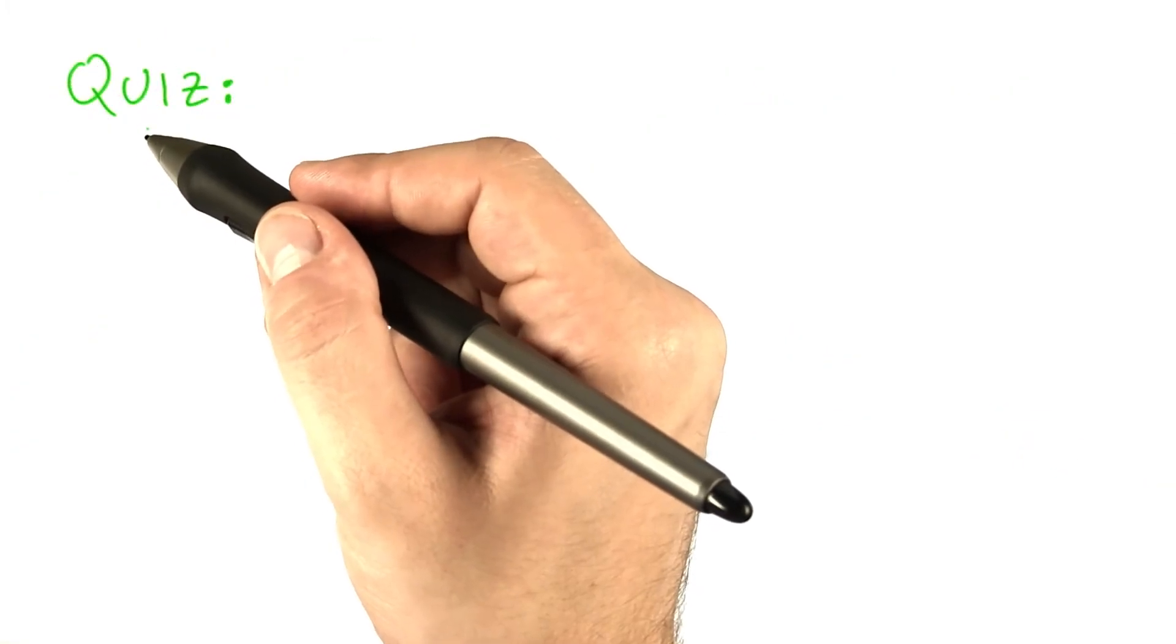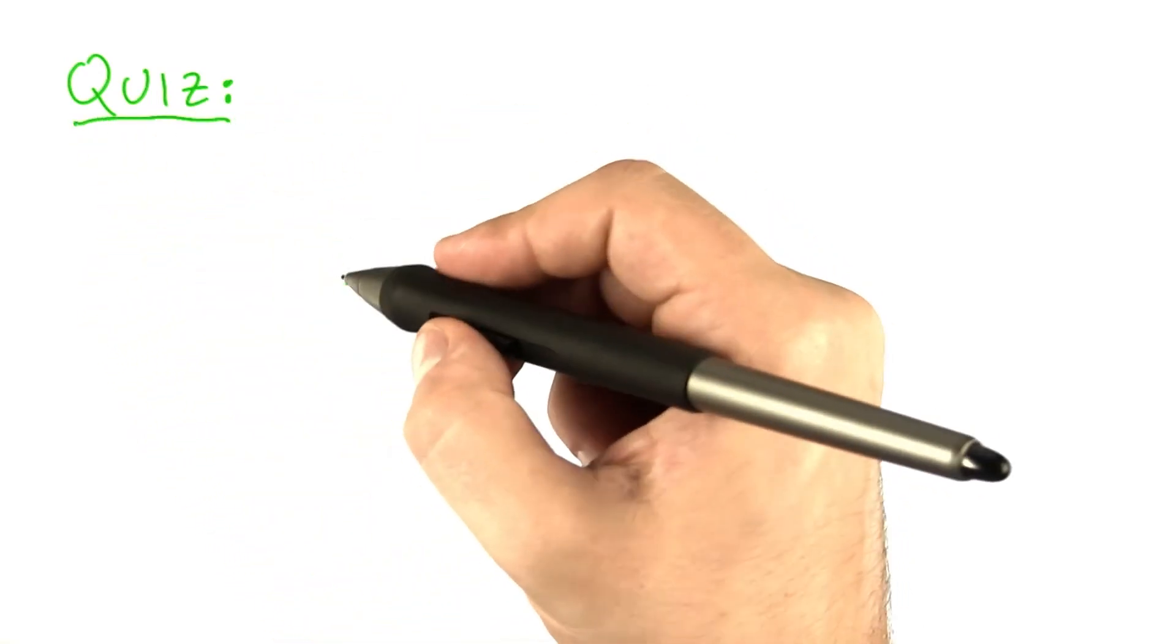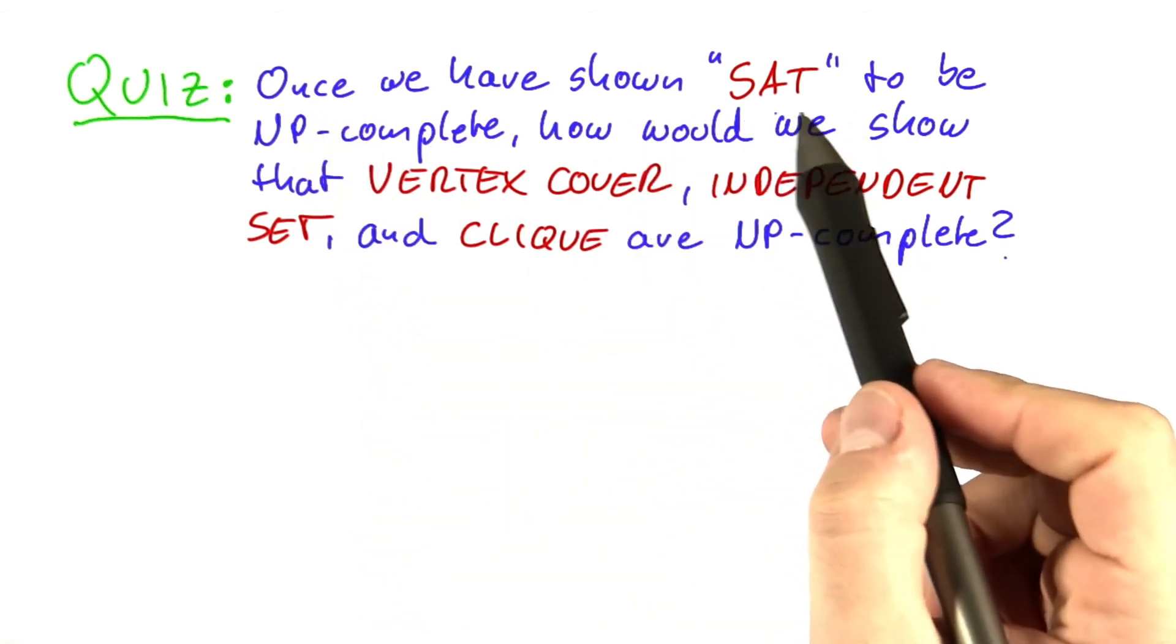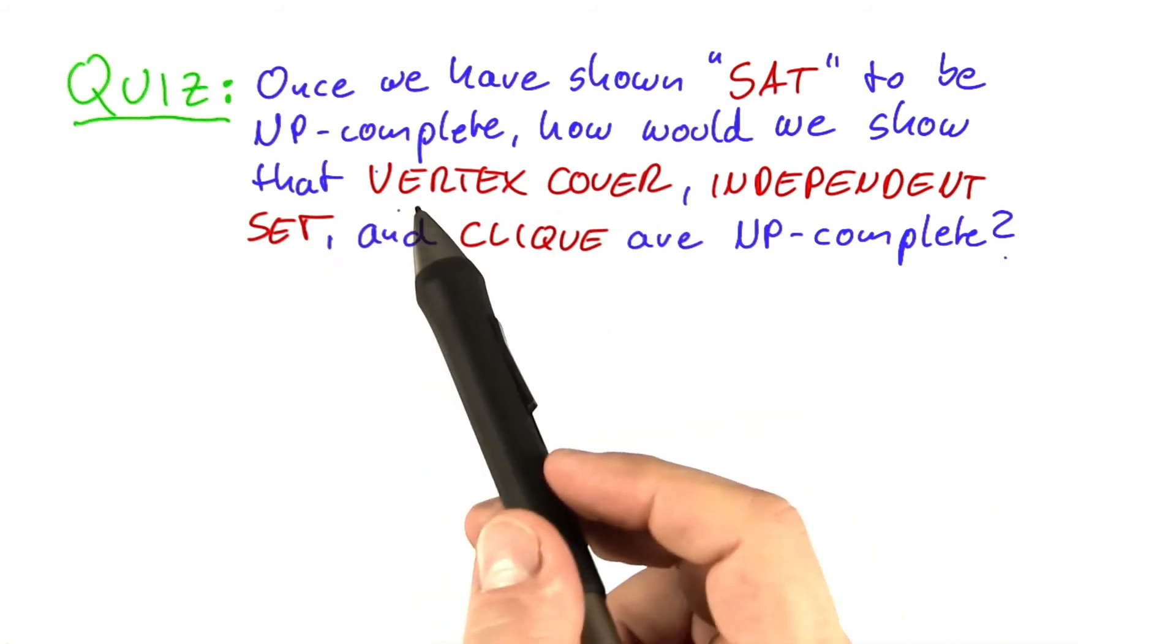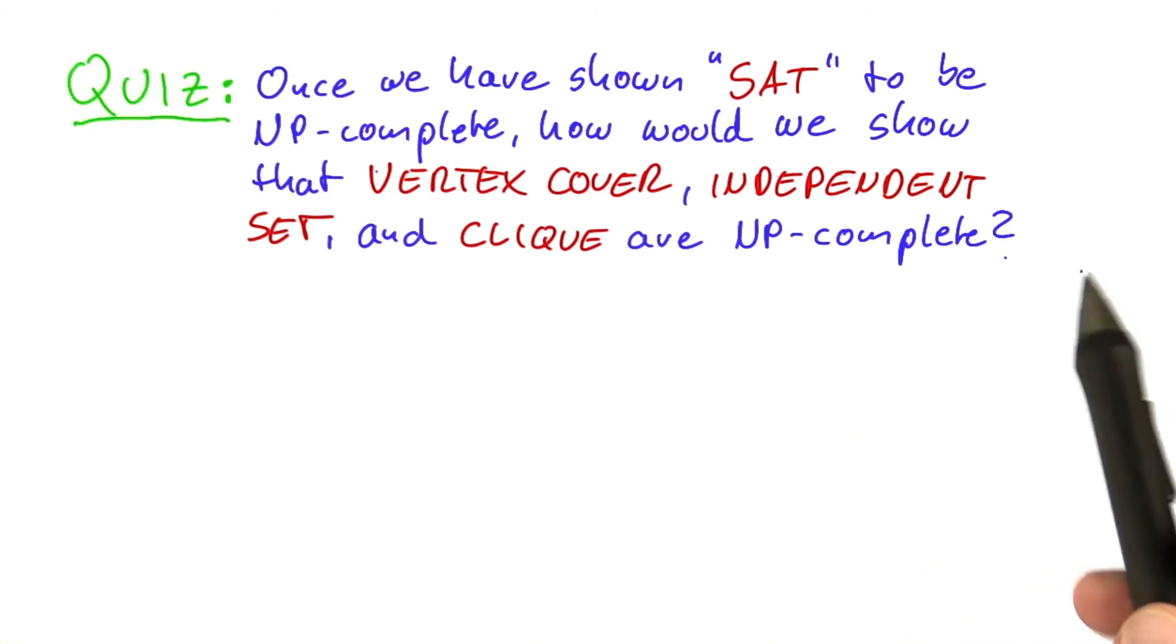Before we go deeper into the SAT problem and proving the Cook-Levin theorem, here's one more quiz to make sure that you understand where we are going with this. So once we have shown that the SAT problem is NP-complete, how would we then show that the vertex cover problem, independent set, and clique are NP-complete?